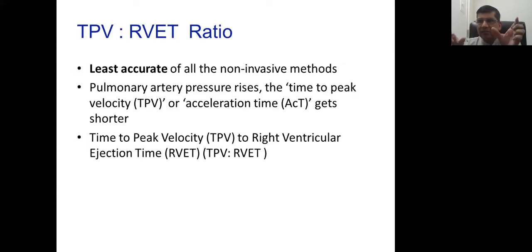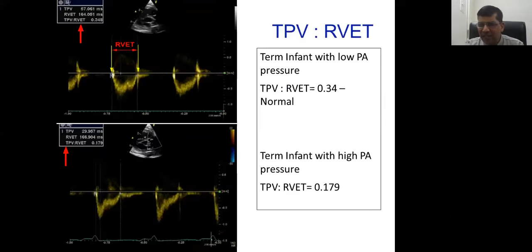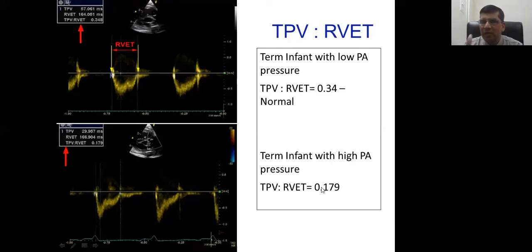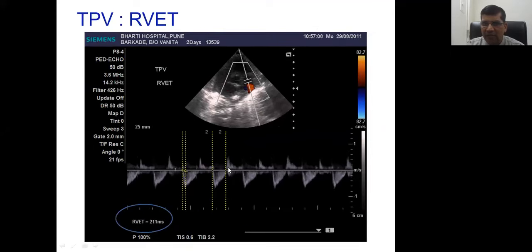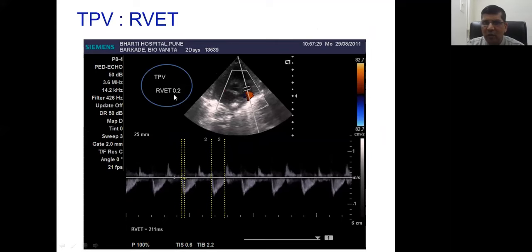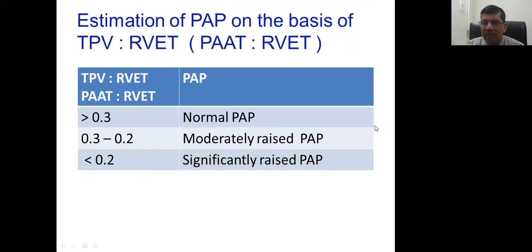The PAAT/RVET ratio method: same short axis view, take the laminar flow, measure peak (that's PAAT or TPV) and measure RVET, then calculate the ratio. Example: TPV 44 ms with RVET gives ratio 0.2 — that's severe pulmonary hypertension. It's a crude method, not accurate numbers, but clinically useful.